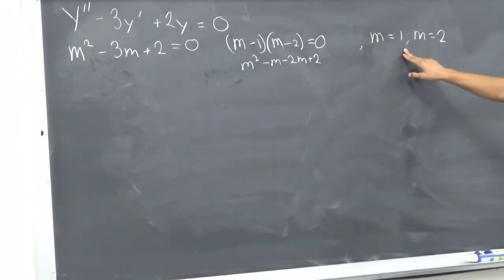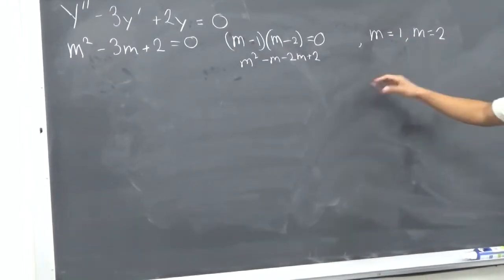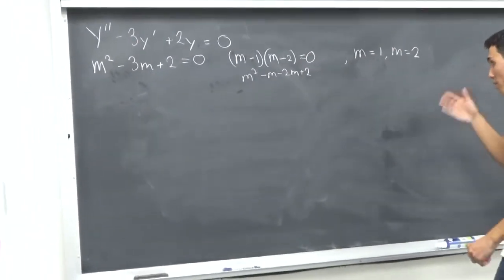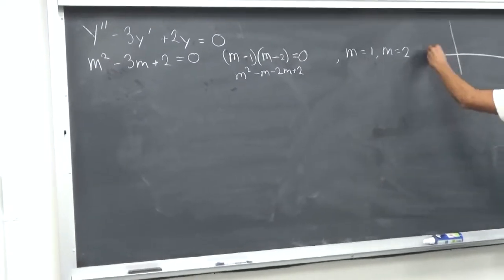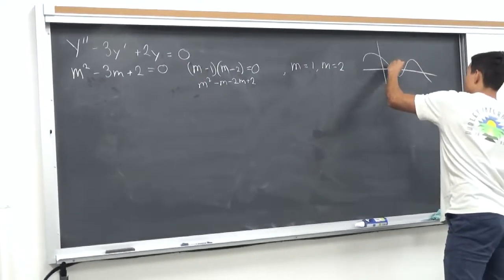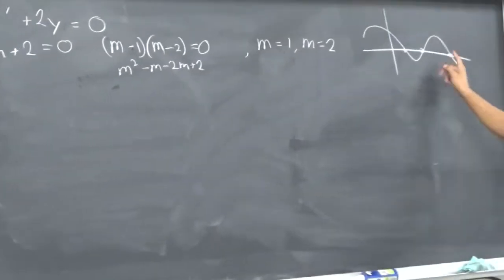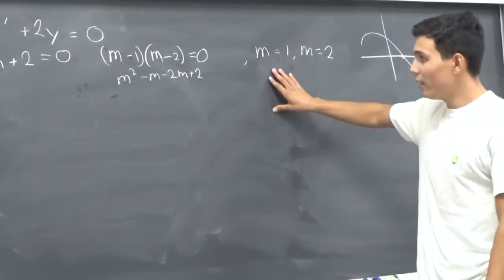And this stuff means whatever m is equal to, this will be 0. That's why we call it our roots, right? We have a graph. The roots are wherever it hits 0. That's our roots. Now, since that's our roots,